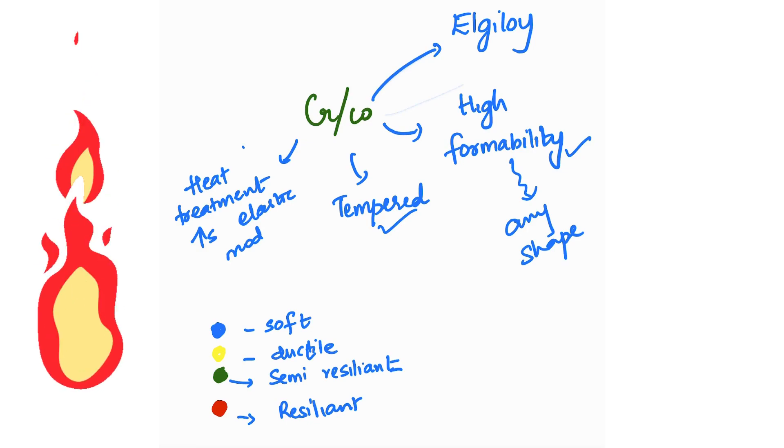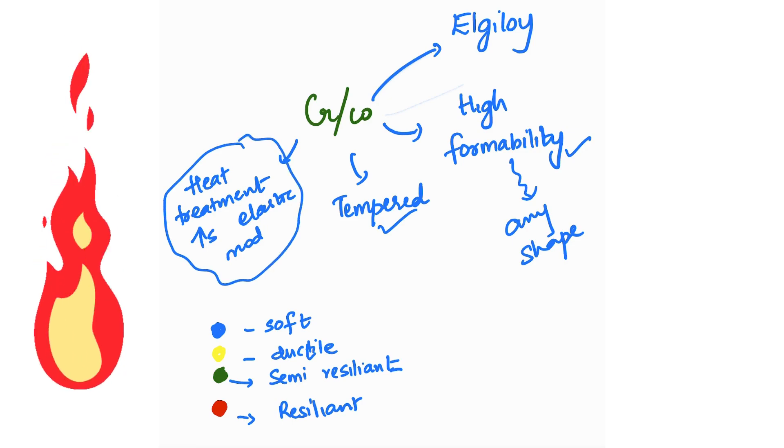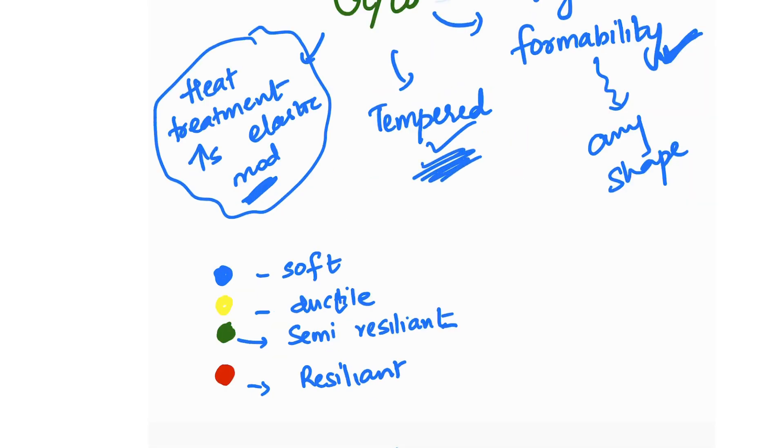Once we shape it, we need it to be strong and hard. At that time, you can use heat treatment. This will increase the elastic modulus and make the structure rigid.